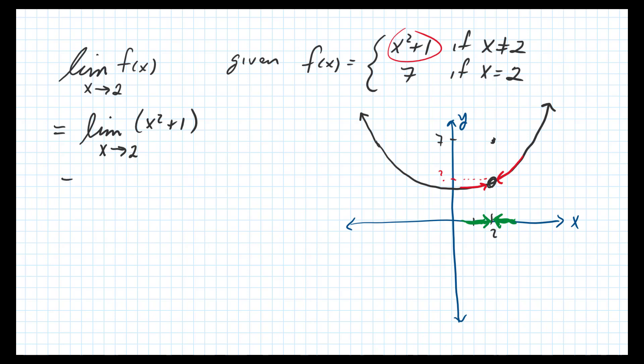In this particular case, we're going to use the x squared plus 1, and then since that's a polynomial, we can do direct substitution. x is equal to 2, so we'd have 2 squared plus 1, and the limit there is 5.